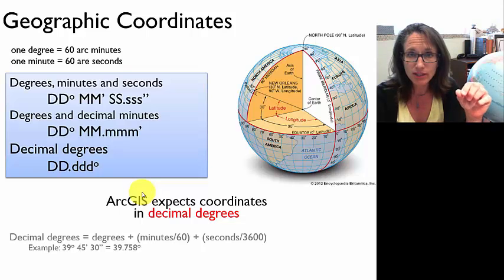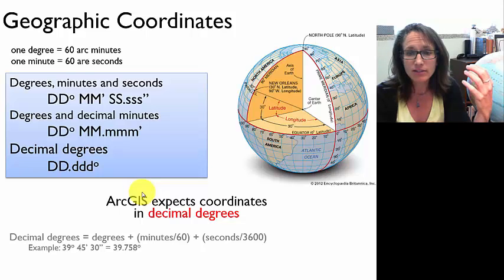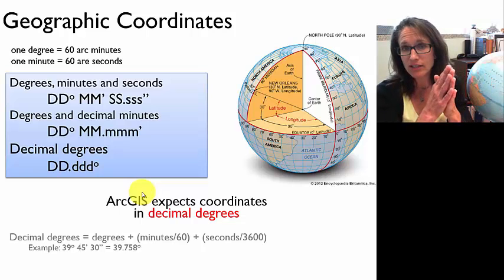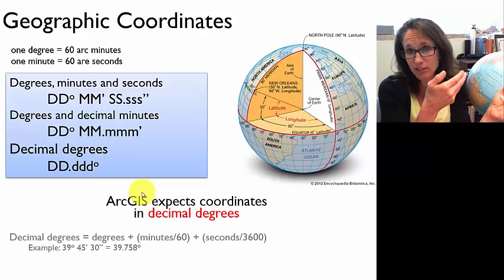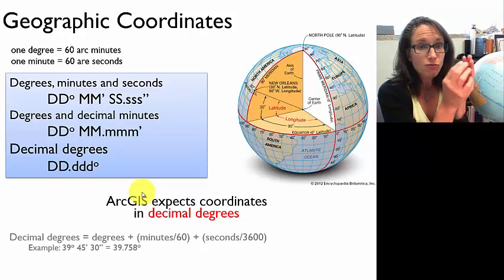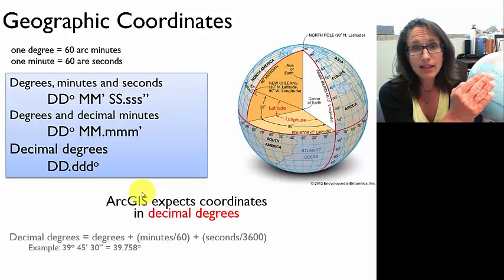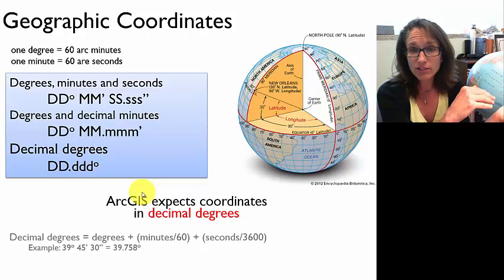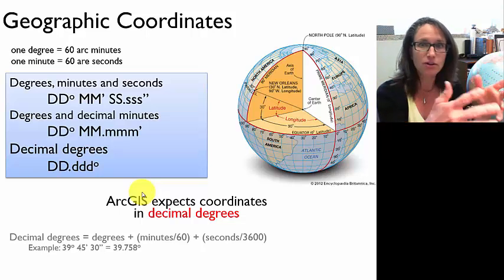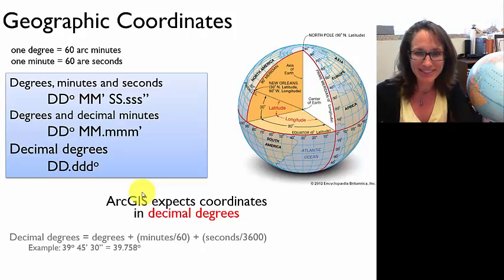Your GPS unit stores raw GPS data always in latitude/longitude decimal degrees. If you choose to view your GPS data in UTM, the unit converts it just for display purposes, but the raw data stored in the GPS unit is always in lat/long decimal degrees. The only time the data actually gets changed is when we export to a shapefile — that's when we actually change the georeferencing of the data. We'll be reviewing this point repeatedly throughout the semester because it's an important concept.